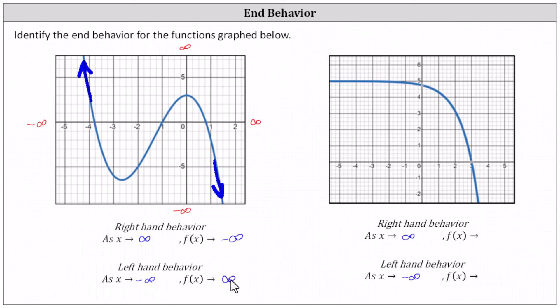Now for the second example, let's first determine the right-hand behavior, which is when x approaches infinity or moving right along the function. As we move right along the function, notice the graph goes down indefinitely, which indicates the y values decrease without bound and approach negative infinity. The right-hand behavior is: as x approaches infinity, f of x approaches negative infinity.